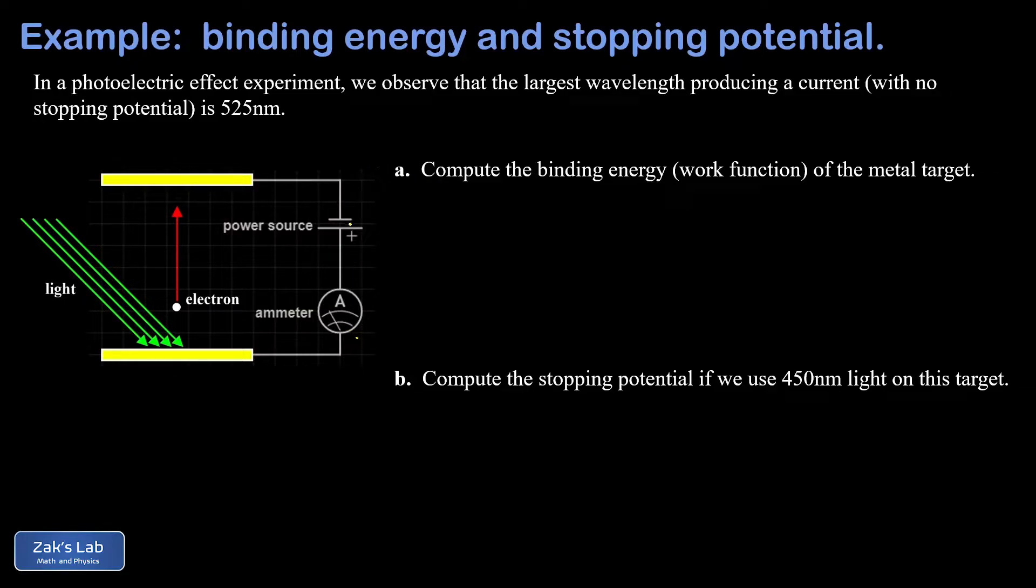Now there's a power source in the circuit, and for the first part of the problem that's turned off. We're applying zero volts to this thing and we're just trying to figure out what's the binding energy of an electron to that metal target, given that the longest wavelength of light that will produce a current is 525 nanometers.